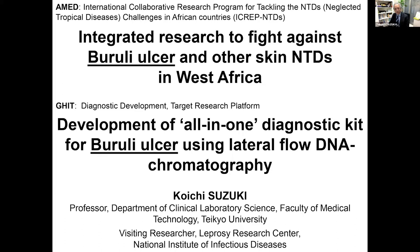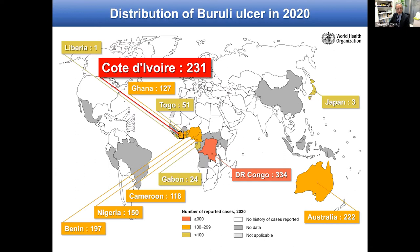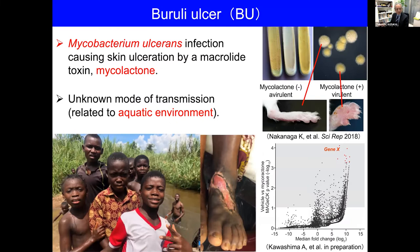Thank you very much. We focused on Buruli Ulcer, one of the NTDs, funded by AMED NTD. We are in the development of an all-in-one diagnostic kit and we are in the final, fourth year. We have begun the development of the all-in-one diagnostic kit starting this year. Buruli Ulcer may not be well known — about 2,000 incident cases are reported to WHO each year. This is a highly neglected tropical disease and most patients are concentrated in West Africa; we are working with Ivory Coast. Buruli Ulcer is caused by Mycobacterium ulcerans.